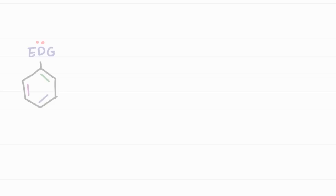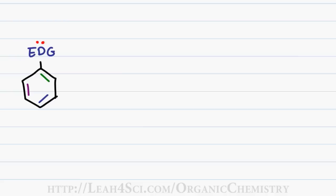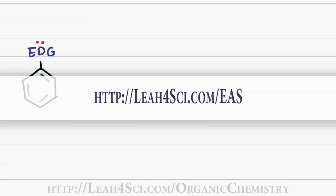In the last two videos, I helped you understand why electron donating groups are activators and ortho-paradirectors while electron withdrawing groups are deactivators and metadirectors. If you're not fully confident with that yet, go back and watch those videos first and you can find them on my website, Leah4Sci.com slash EAS.